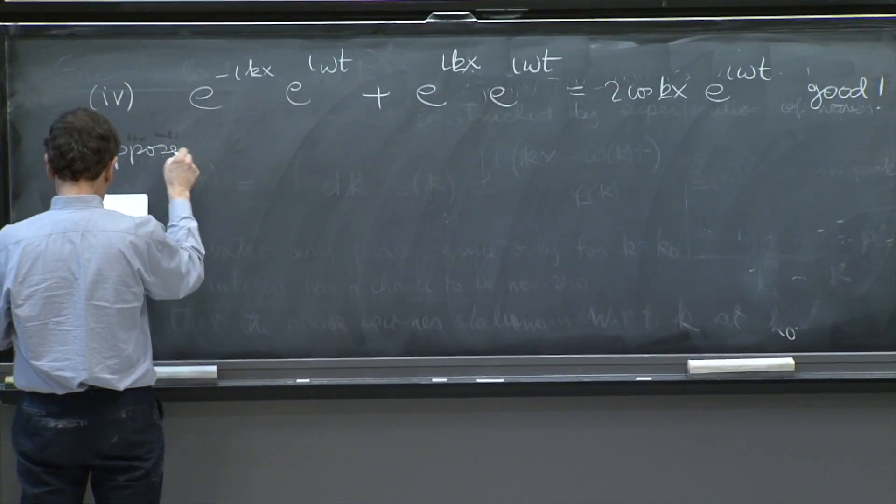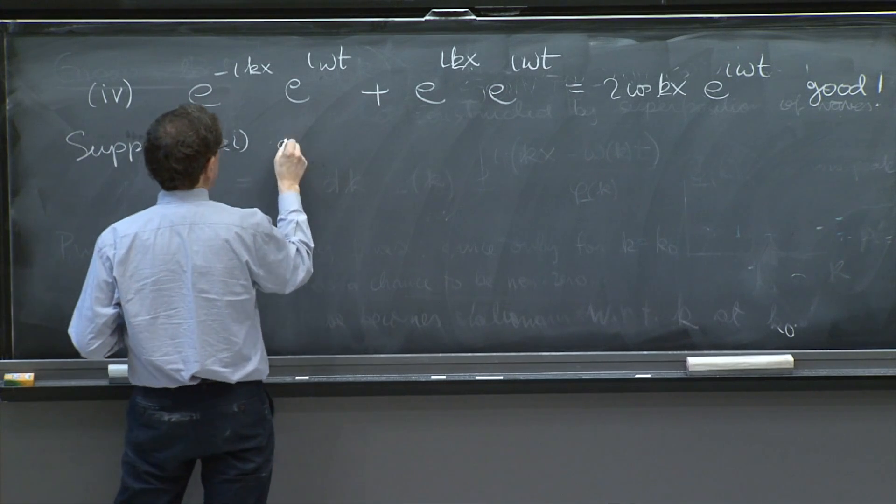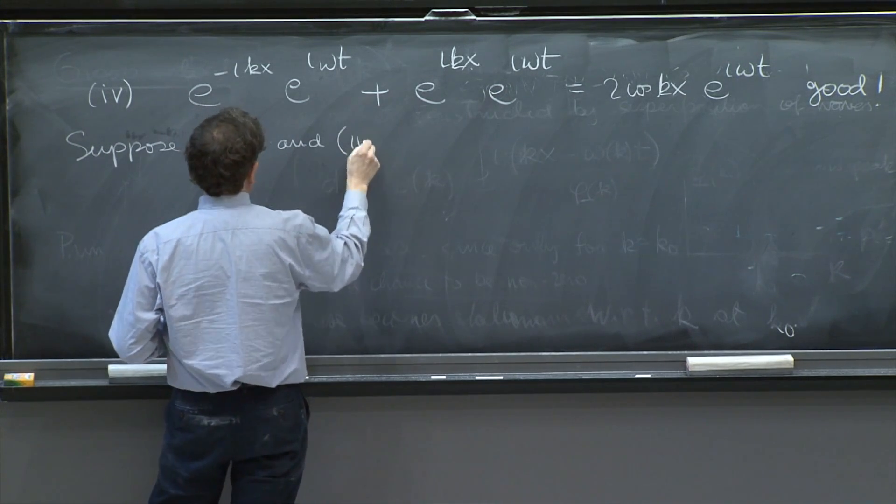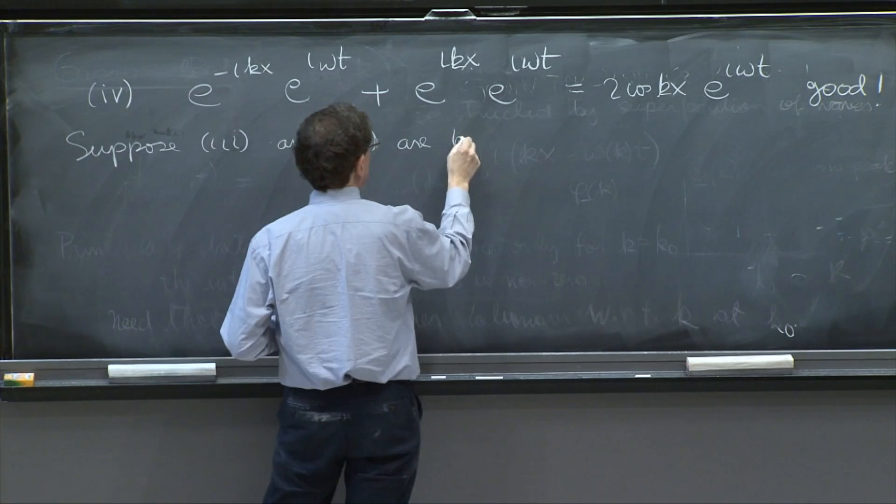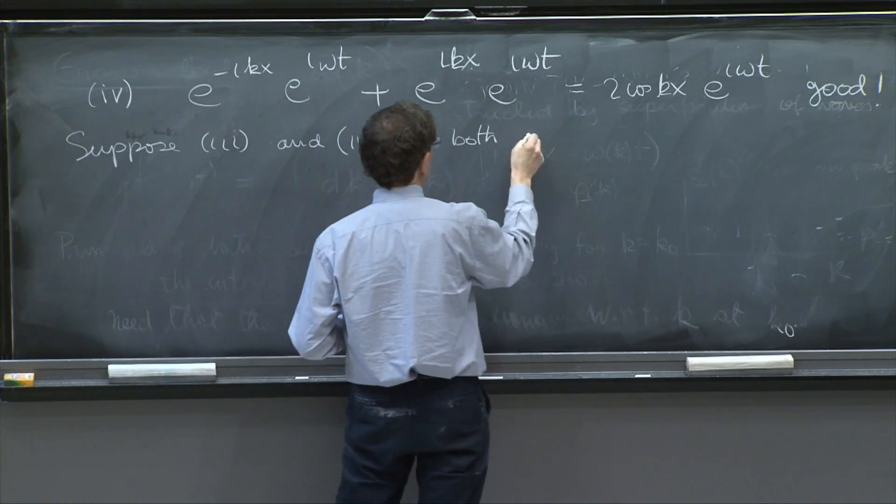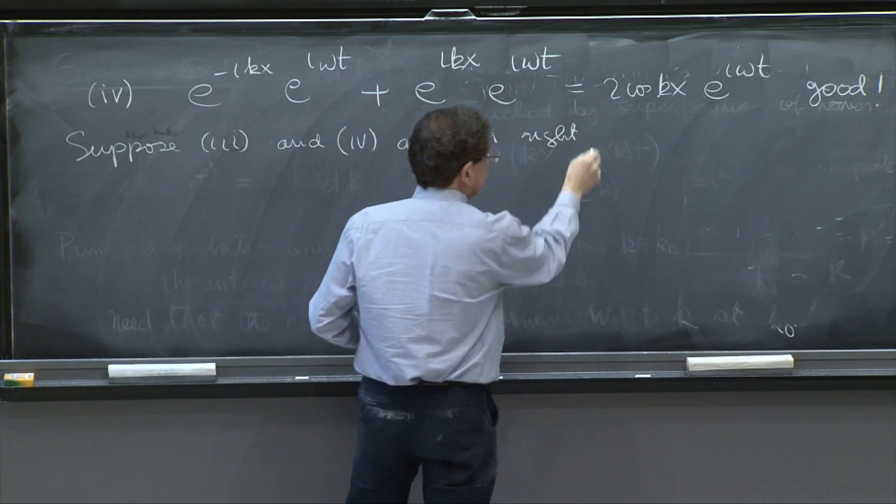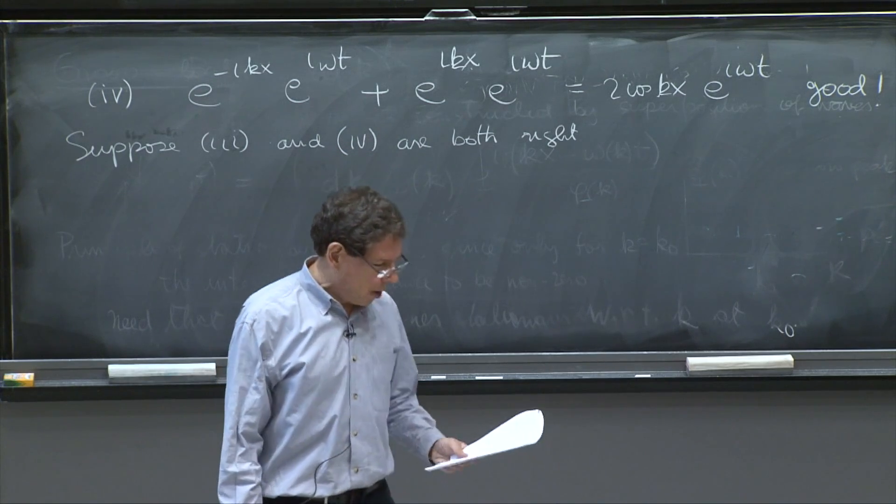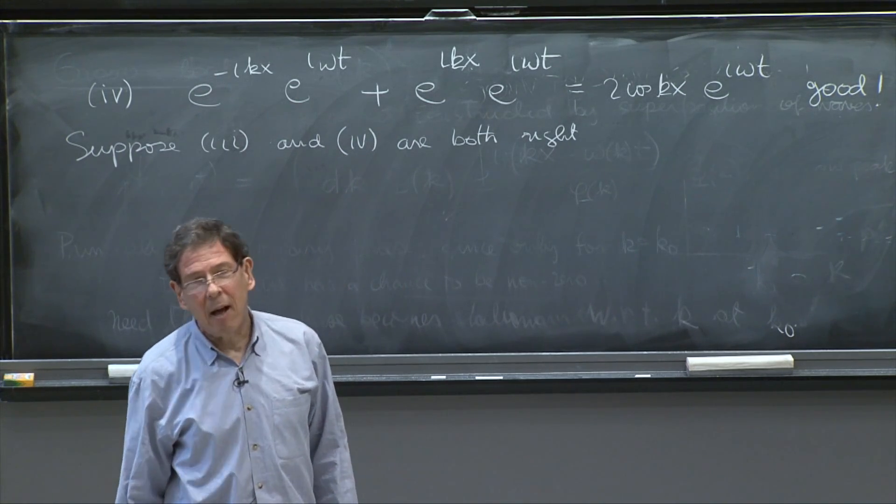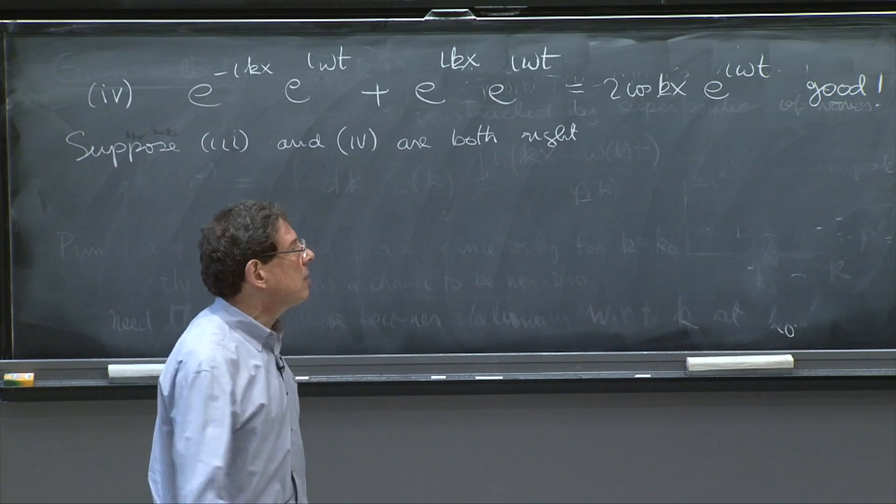So suppose 3 and 4 are both good, both right, even. And then remember that superimposing a state to itself doesn't change the state.